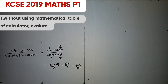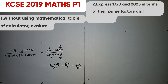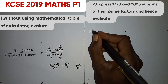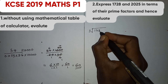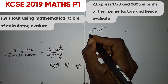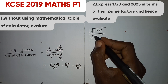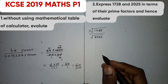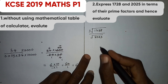Let us go now to the second question, which says: express 1728 and 2025 in terms of their prime factors, then evaluate the cube root of 1728 over the square root of 2025. Let us first find the prime factors of 1728.